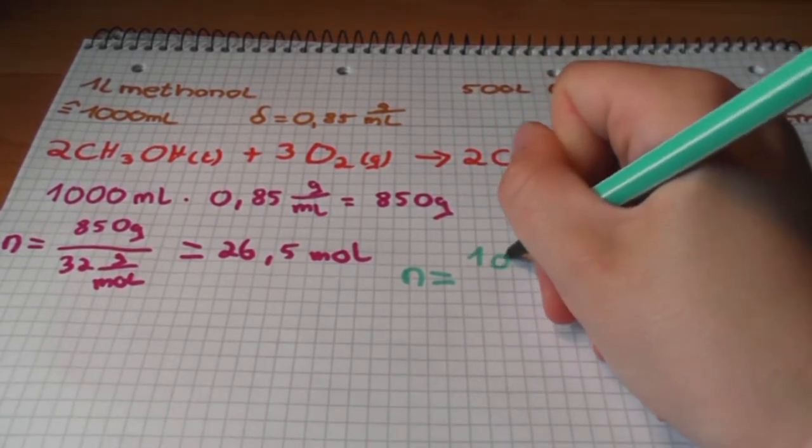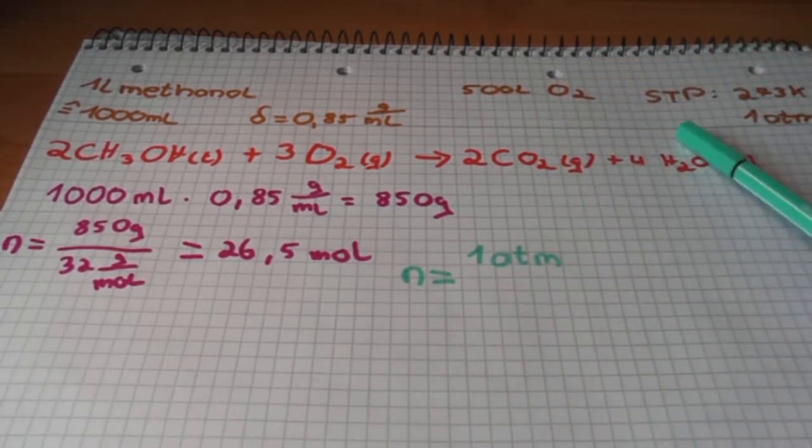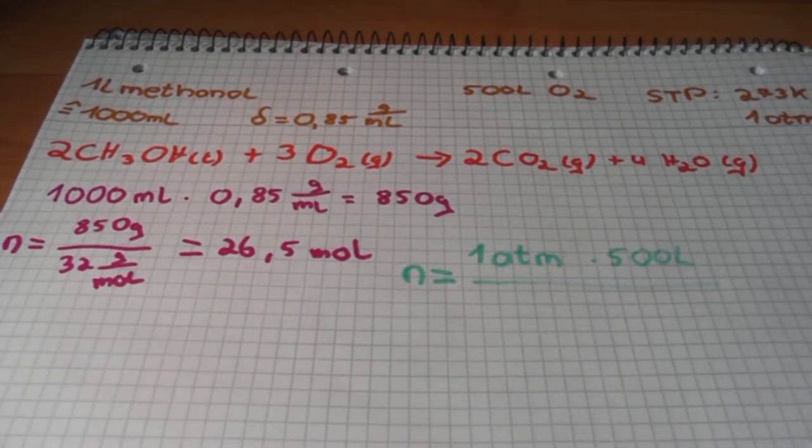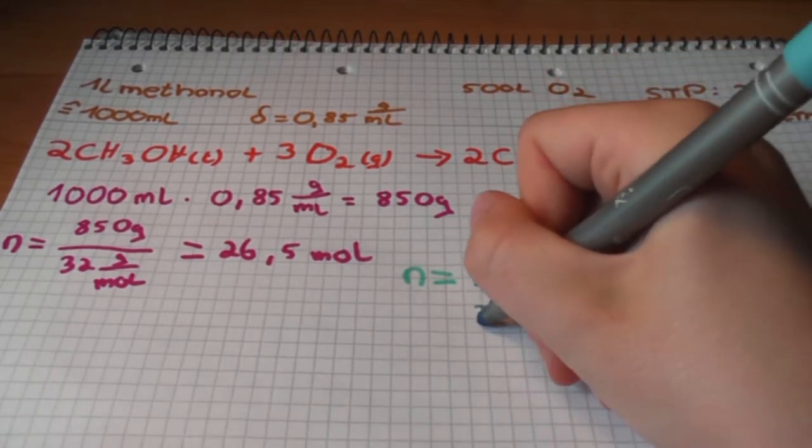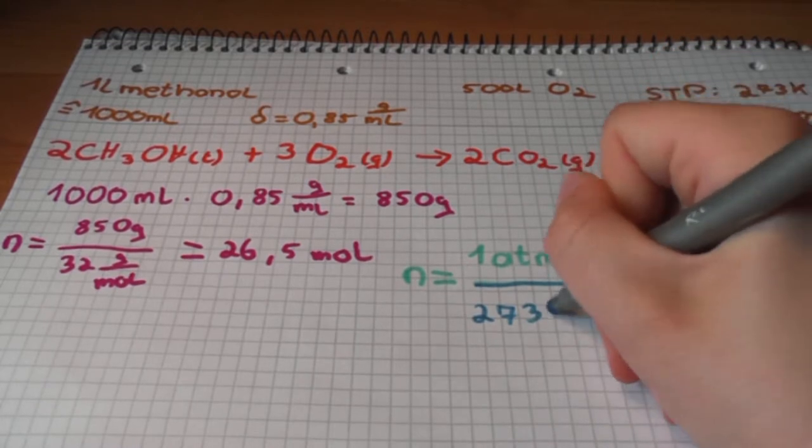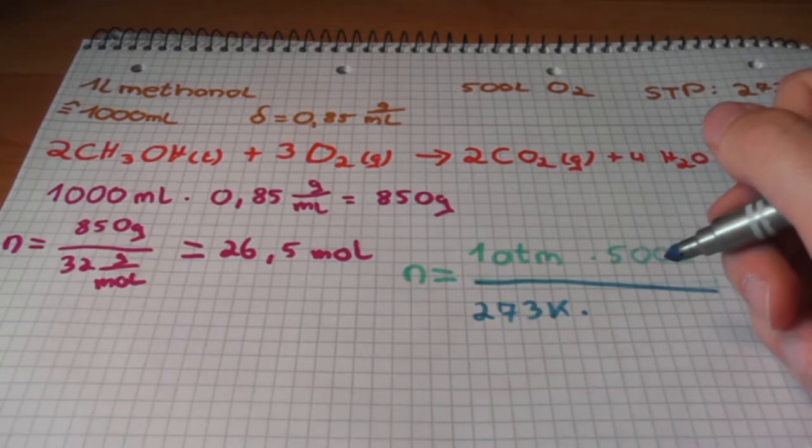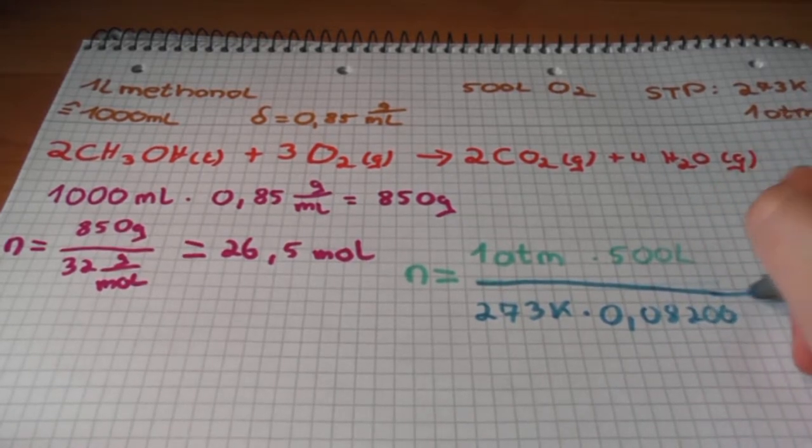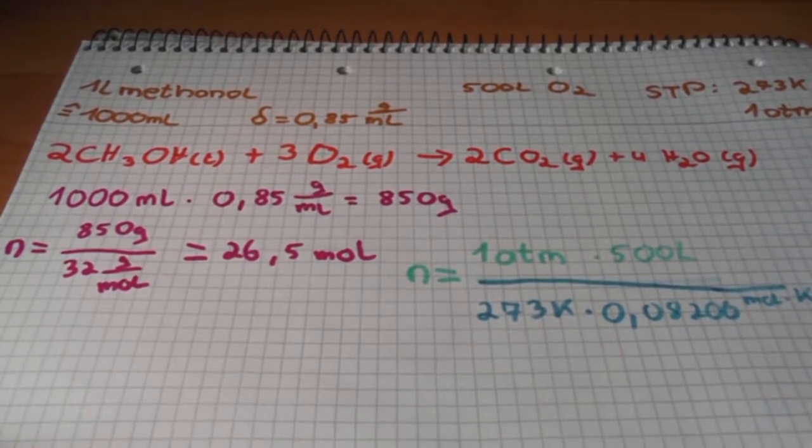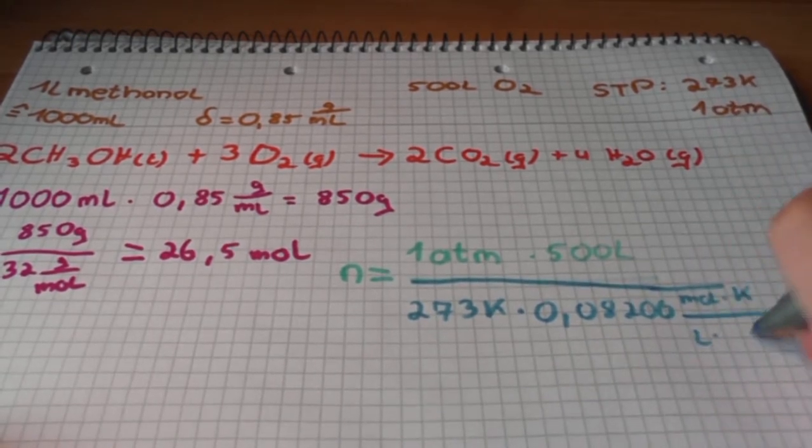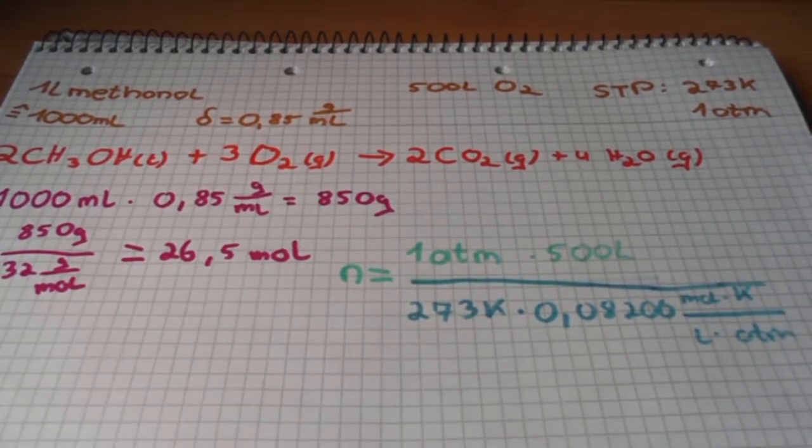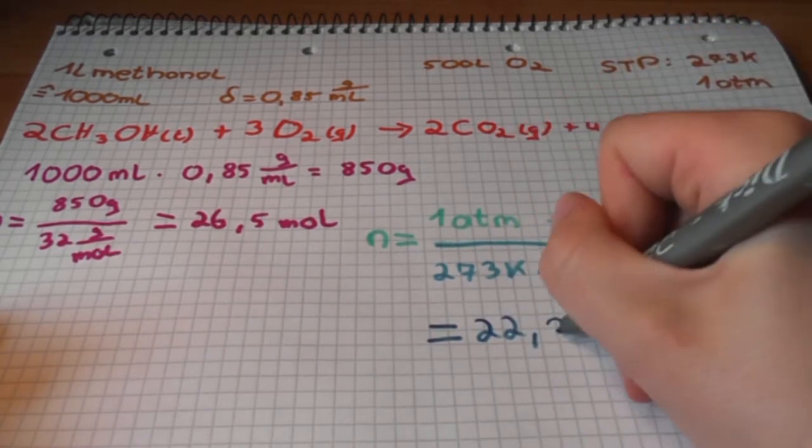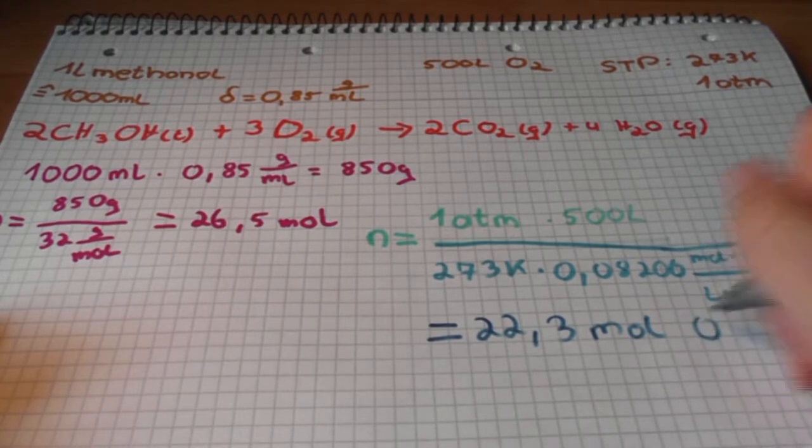For the oxygen gas, we need the ideal gas law. So we take the 1 atmosphere because of the STP and the 500 milliliter and divide it by 273 Kelvin and the gas constant which is 0.08206 mole and Kelvin per liter and atmosphere. And so we get 22.3 mole of oxygen gas.